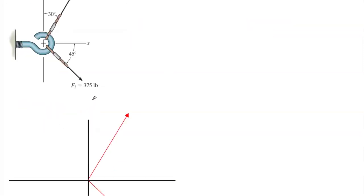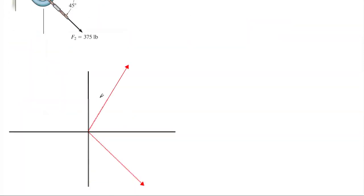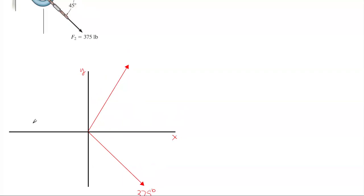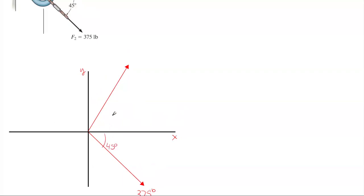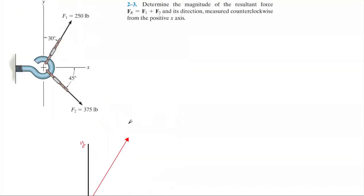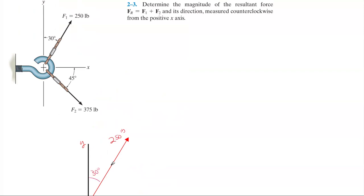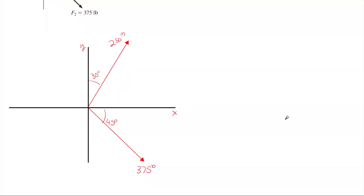The first thing we want to do is create a free body diagram, and it'll be much easier when we draw our parallelogram. So this will be our F2 force, which is 375 pounds, 45 degrees below the x-axis, and then our top force F1, which is 250 pounds, 30 degrees off of the x.